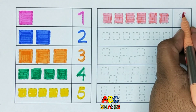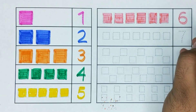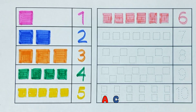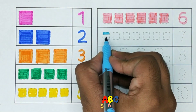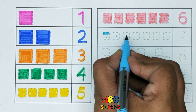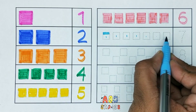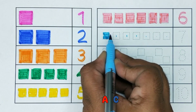6 squares. This is number 6. Next we have 1, 2, 3, 4, 5, 6, 7 — 7 squares.